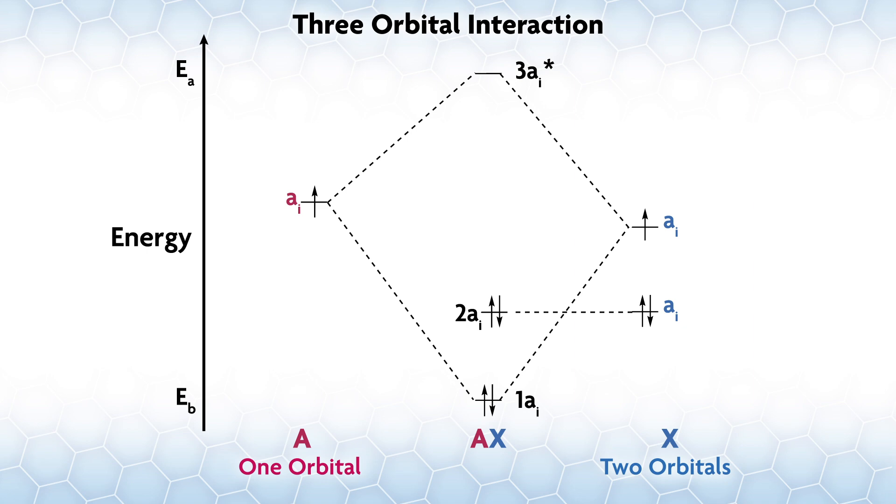So we'll pick the one closer in energy to the orbital on X here. You form a bonding and antibonding interaction with two of the orbitals, but what do you do with the third? If you don't have any other information, it should come across as non-bonding. So you'll combine to make a set of bonding, non-bonding, and antibonding orbitals.